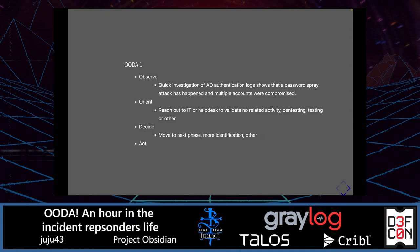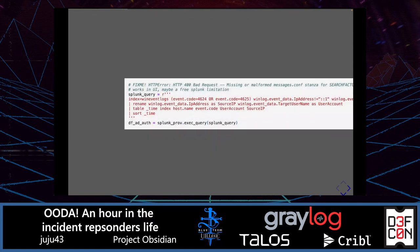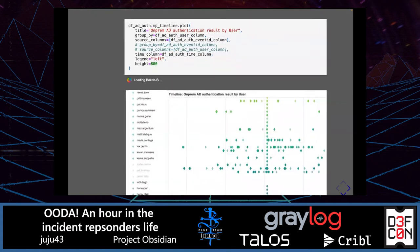After that, we want to decide: do we move to the next phase or continue identification? Let's review how we can analyze the authentication log. As part of our Jupyter notebook, we are using the MysticPy library to do a Splunk query. As an example, we collect successful and failed logons per user account and source IP. If we try to visualize this data, we have a nice chart of AD authentication by user.